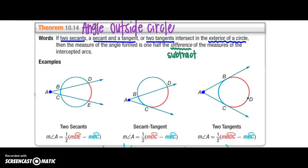If you notice, I have two secants here. So I'm going to take angle A equals one half of, I'm going to take my big arc DE minus my small arc BC.